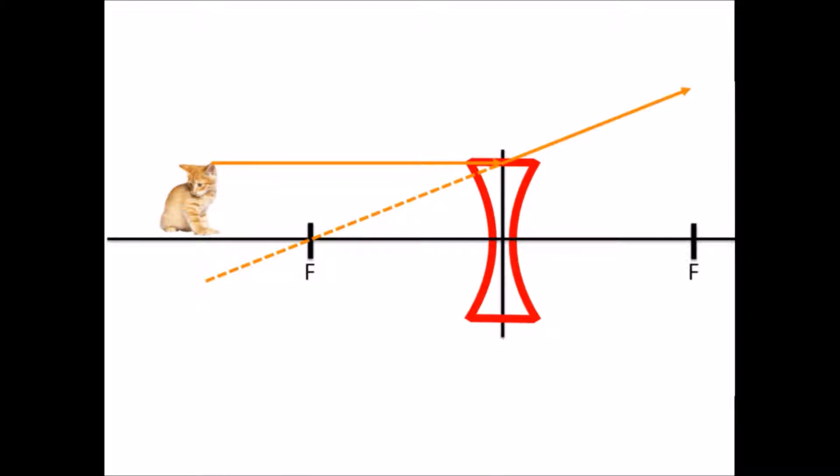And here's the refracted ray. Notice it's moving up and away from the axis, almost like a ray reflected off a convex mirror.